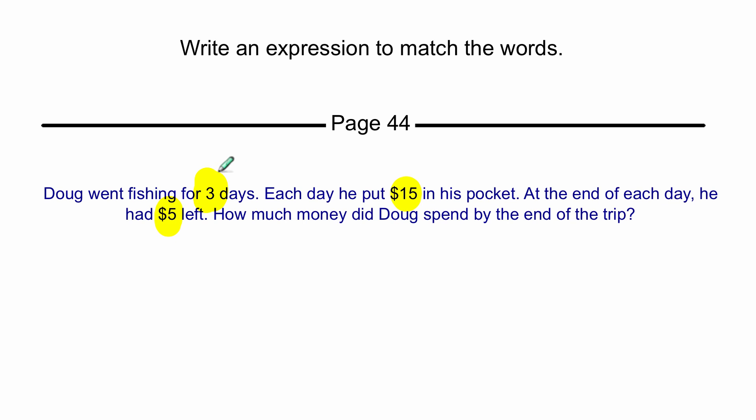How much money did Doug spend at the end of the trip? All right, so he went for three days, and every day he put $15 in and had $5 left. We have to write a number sentence for this. So when you're talking about each day and there's three days, you know the three is going to be part of it. The each means multiply here. So three days, and each day he did this. Now when you have two more of these things, sometimes you have to put them in parentheses because each day he started with $15, and he subtracted some money to get $5 left.